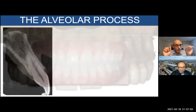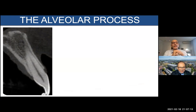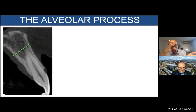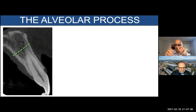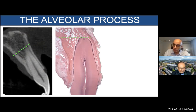Let me describe the alveolar process in more detail. To your left you can see a CBCT scan. I will draw a green dotted line — above is the basal bone, below is the alveolar process. To your right you can see the buccal or facial bone, and to your left the palatal bone of the alveolar process. I will present the same in a histological section — once again above the basal bone, below the alveolar process.